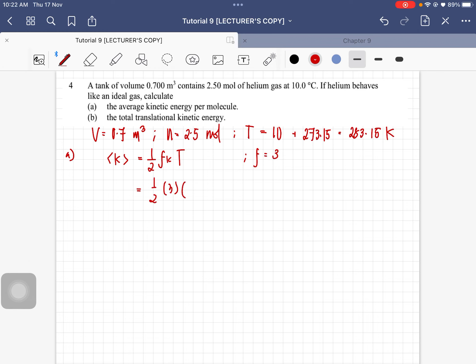So half, 3 F is 3, K is 1.38 times 10 to the power of negative 23, 283.15. So just substitute that into your calculator, calculate it, and you'll get 5.86 times 10 to the power of negative 21 joule as the average kinetic energy.